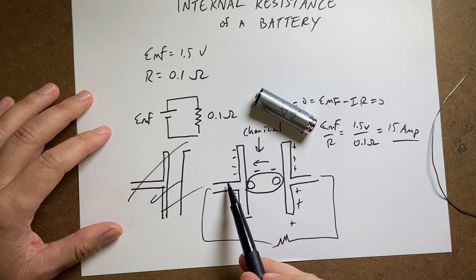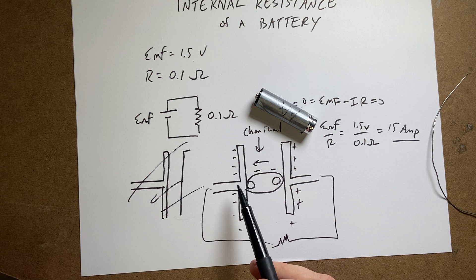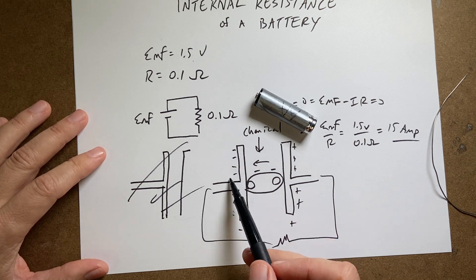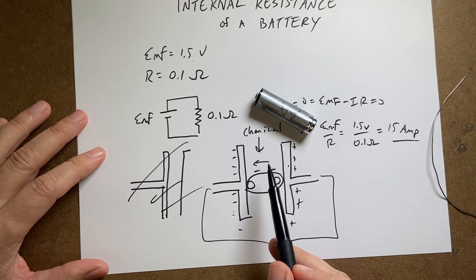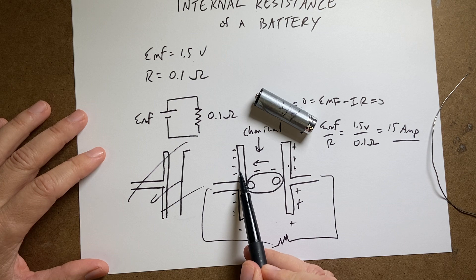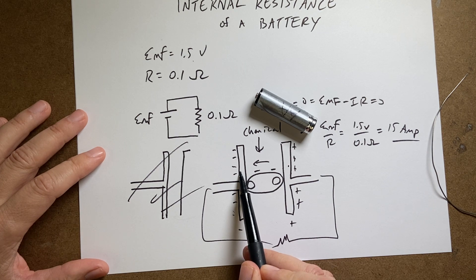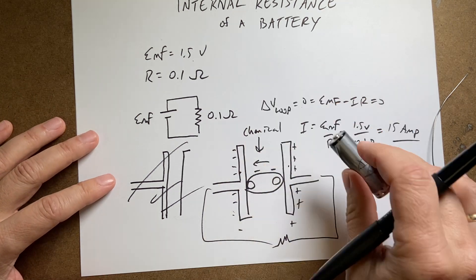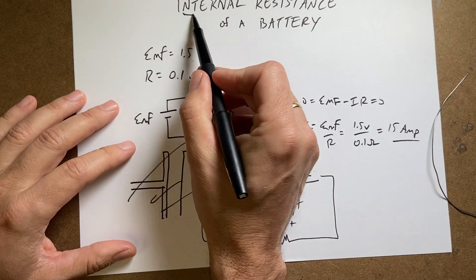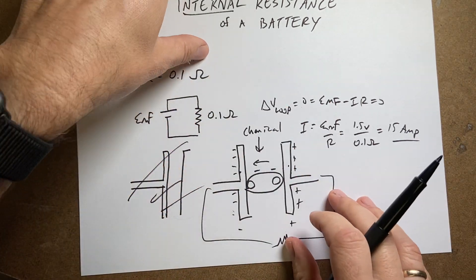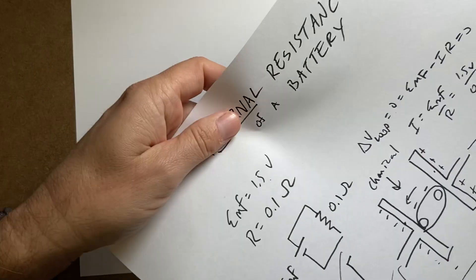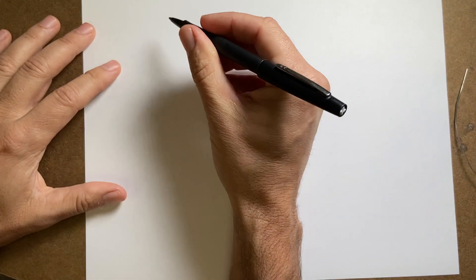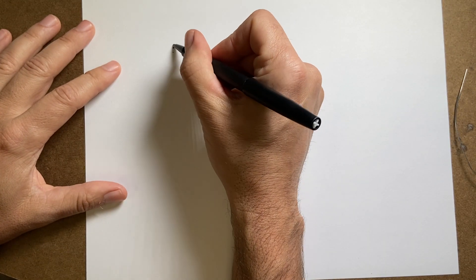But if I have current that's too high, then these charges are leaving the plate faster than the charges can move over here. And then I don't get the current that I would expect. One way to model this is with the idea of internal resistance. So let's say that we have our battery. And it's not super important, but it is real life. So here's my battery. I'm going to draw big.